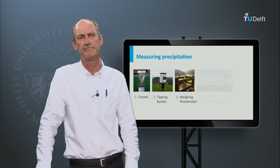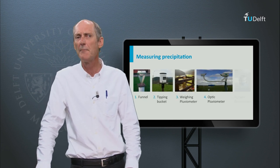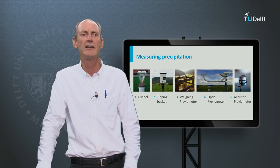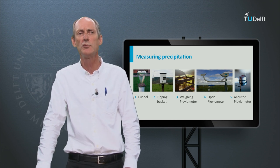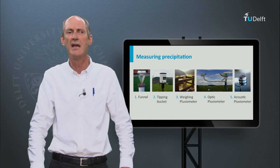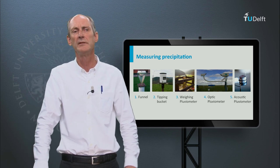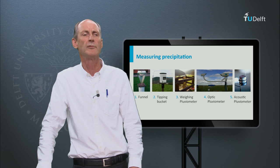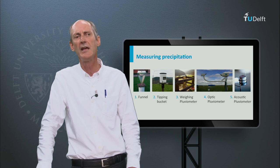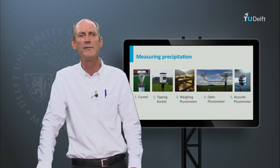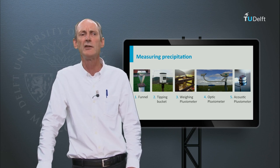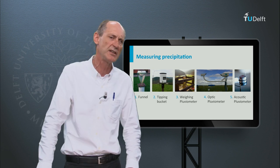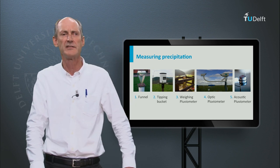How do we measure precipitation? There are many devices. The most traditional is the regular funnel-shaped tube, which you empty once per day. You read the volume, divide it by the surface area and record the amount of rainfall per day. Other devices make use of weighing, optics, acoustics or a tipping device.